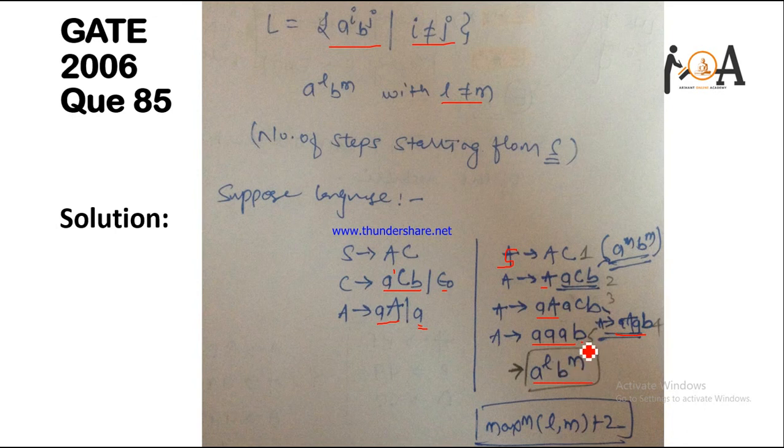So basically in the final step we have A to the power L, B to the power M, where L here is 3 and M here is 1, so our condition is matching where L does not equal M. Basically if you will see there are 5 steps: 1, 2, 3, 4, 5 steps are there, and the maximum length of L here is 3.